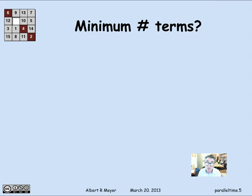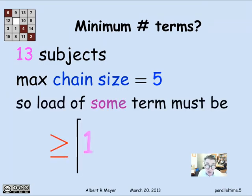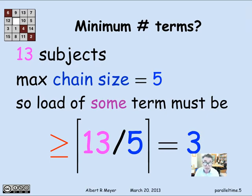Can you do better than three subjects per term? There's a trivial argument that says no. In the previous example we had 13 subjects to schedule and the maximum chain size was 5, so it would take at least five terms. That means you have to distribute 13 subjects among five terms, so there must be some term with at least the average — 13 divided by 5. Rounding up to an integer, the minimum number of courses in some term is 3, since 13 divided by 5 rounded up is 3.